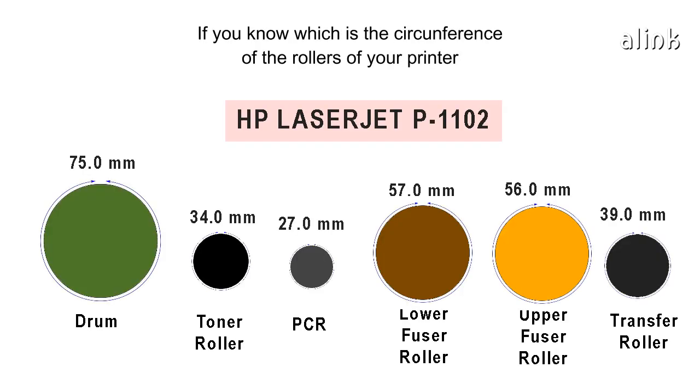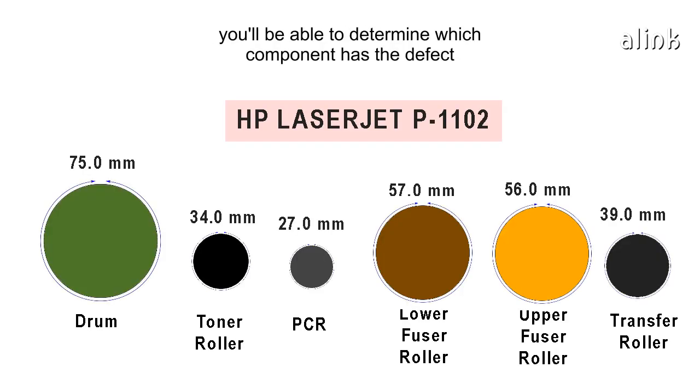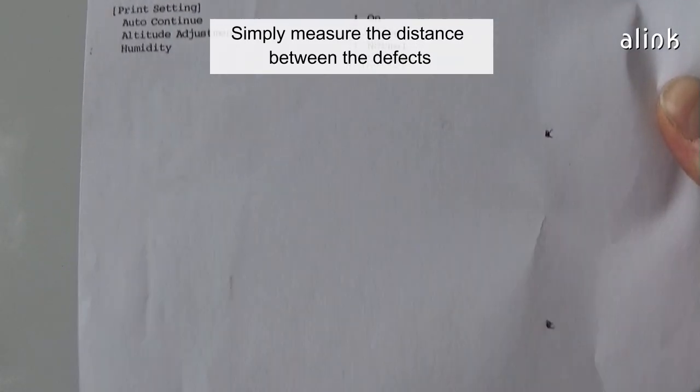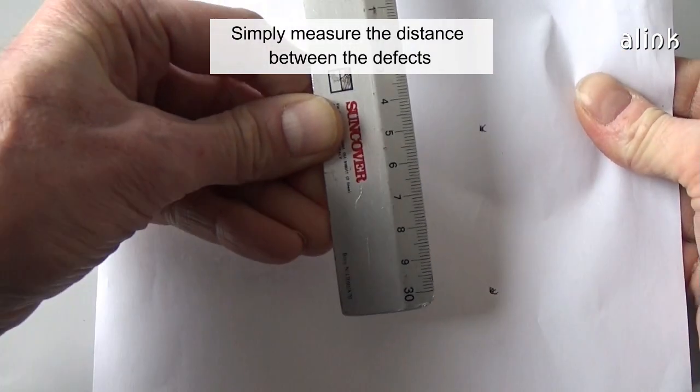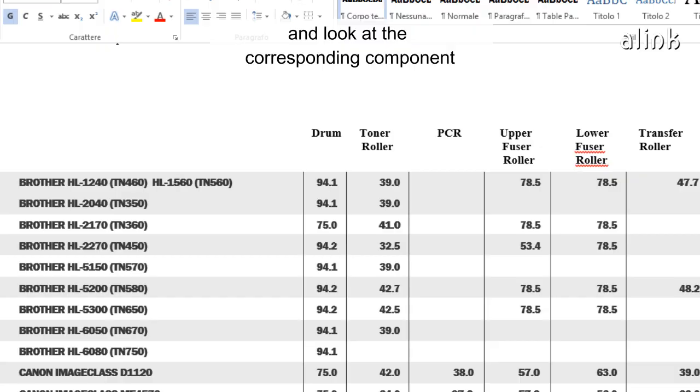If you know the circumference of the rollers of your printer, you'll be able to determine which component has the defect. Simply measure the distance between the defects and look up the corresponding component.